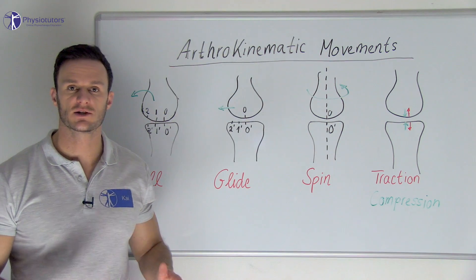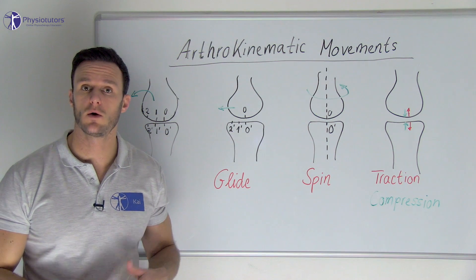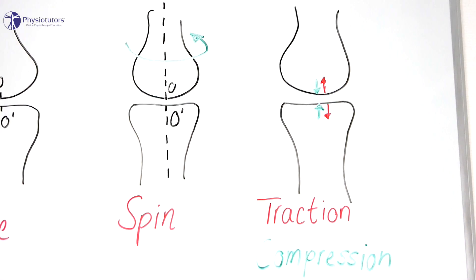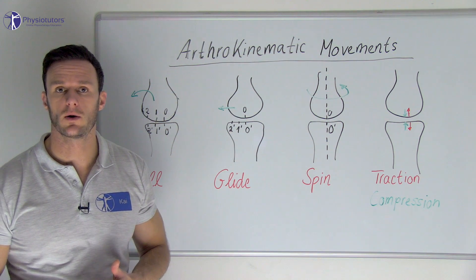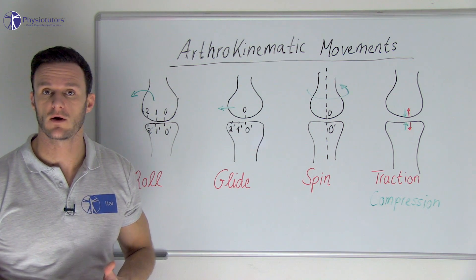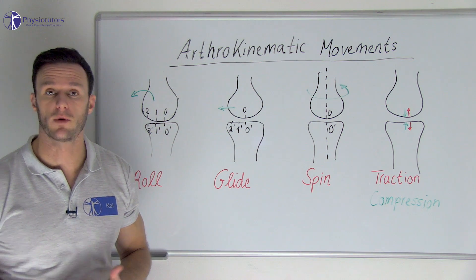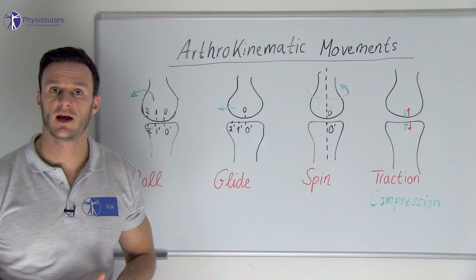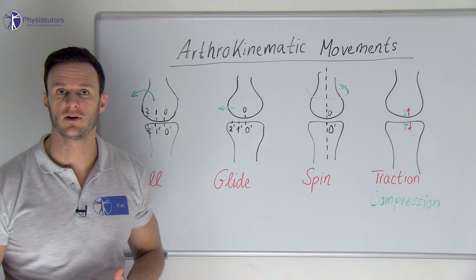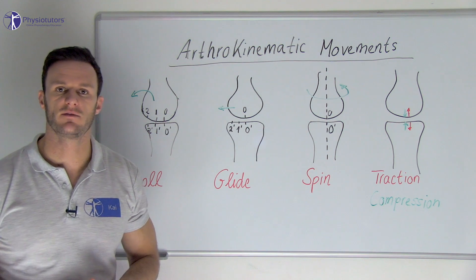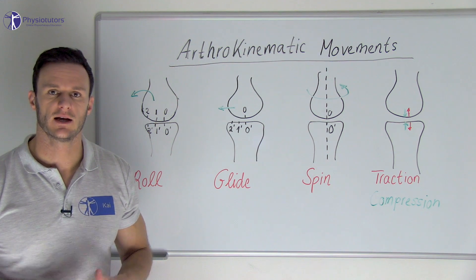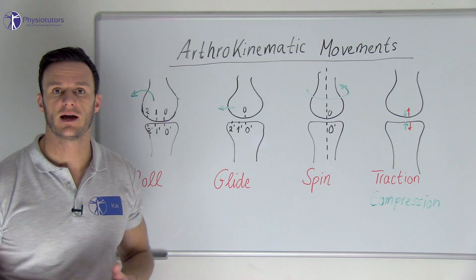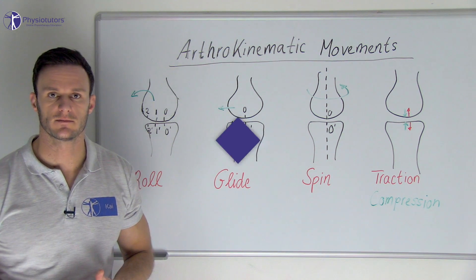Then we have traction, which is the distraction or separation of two joint partners, seen in red here. Be aware that traction does not always occur in the direction of the long axis of the bony partners. In the hip joint, for example, traction in the direction of the axis of the femur would result in an inferior glide. Instead, traction must happen perpendicular to the joint line of the concave joint partner.